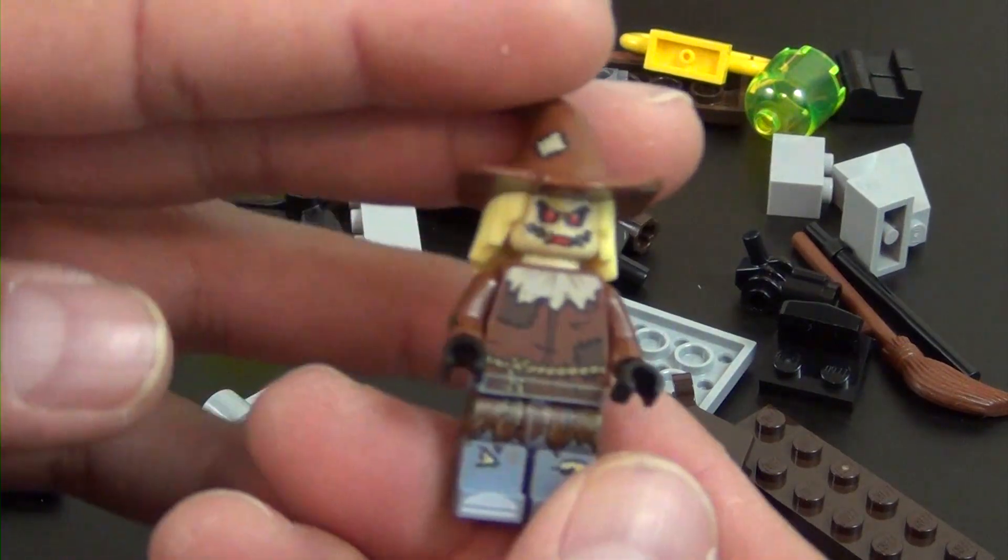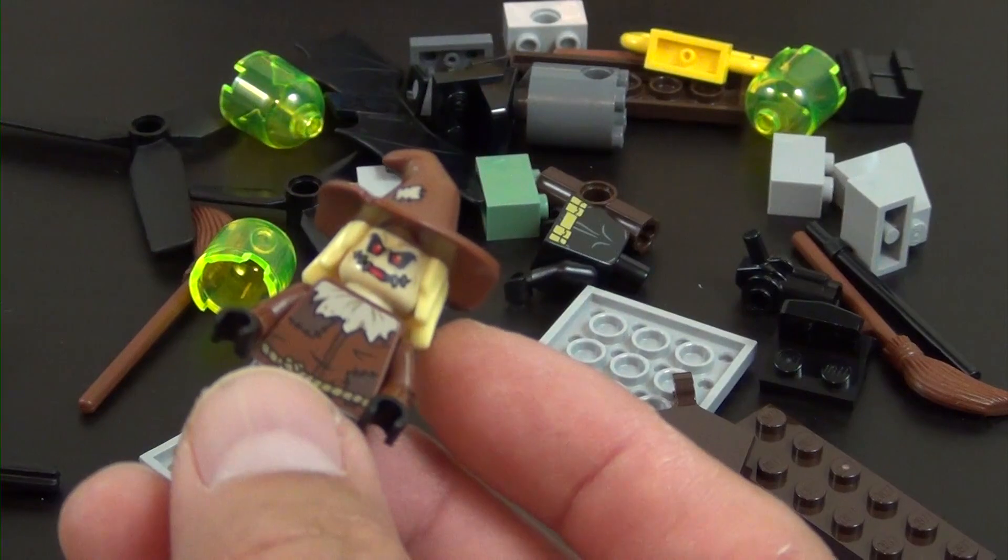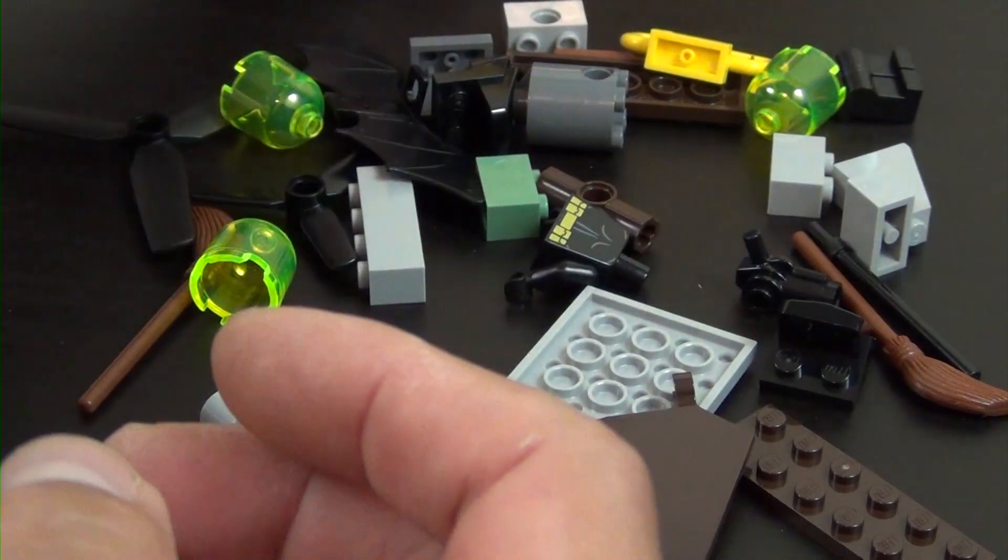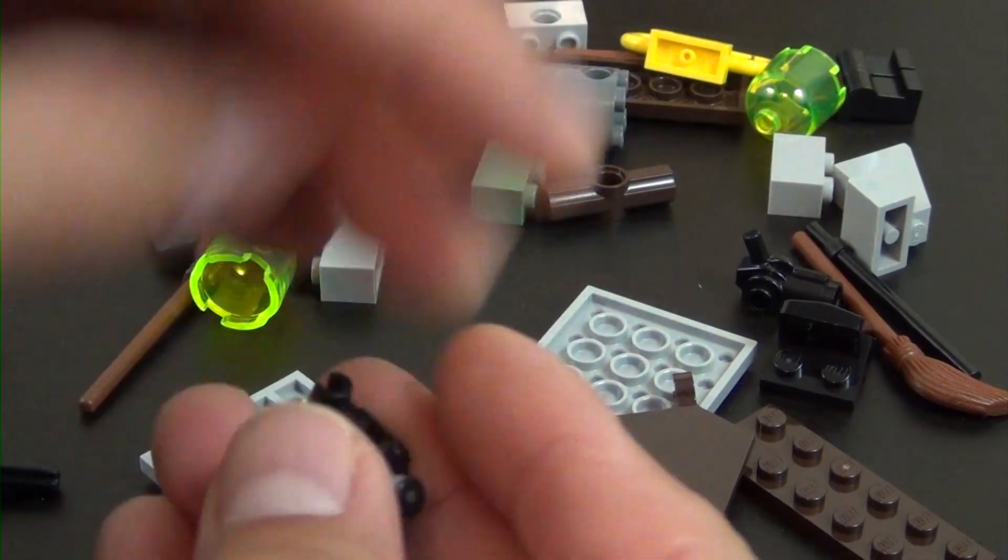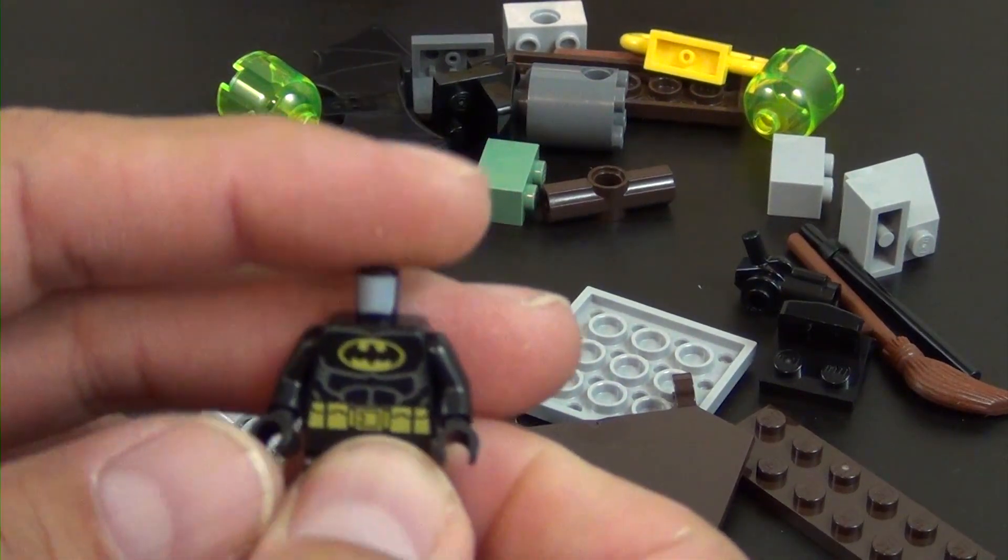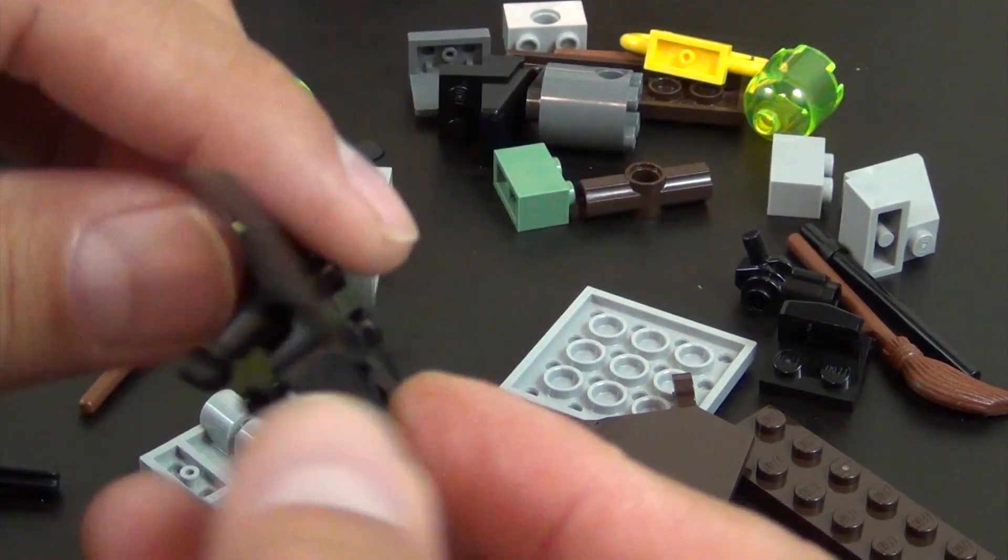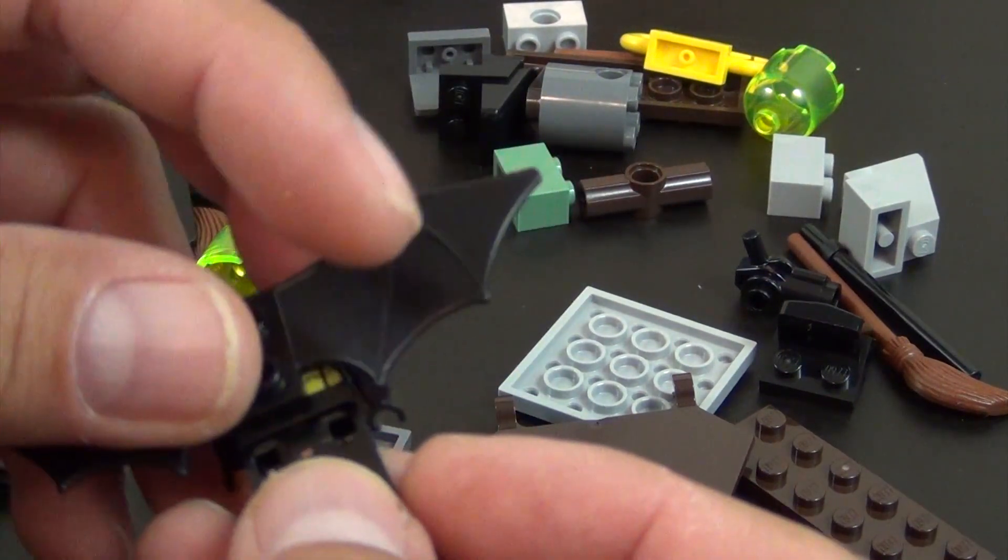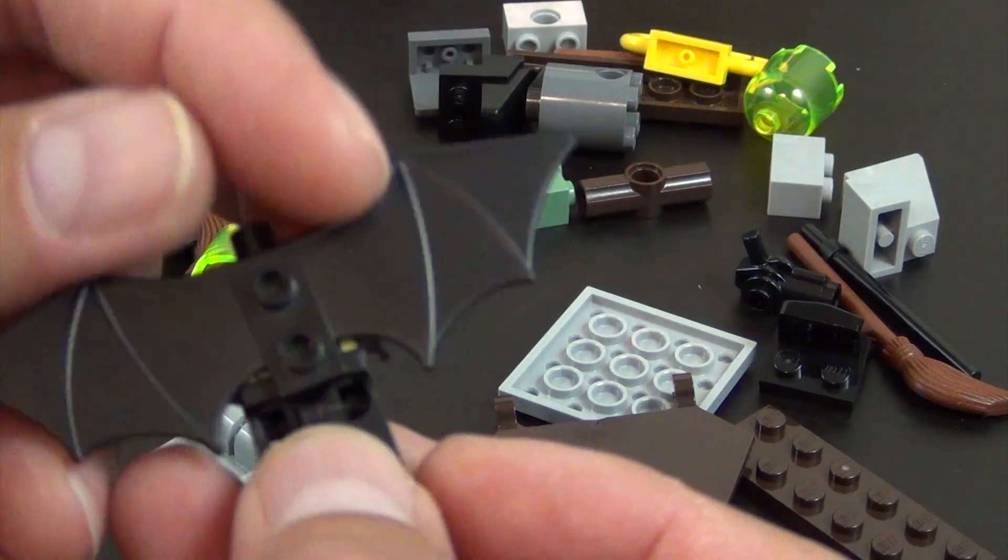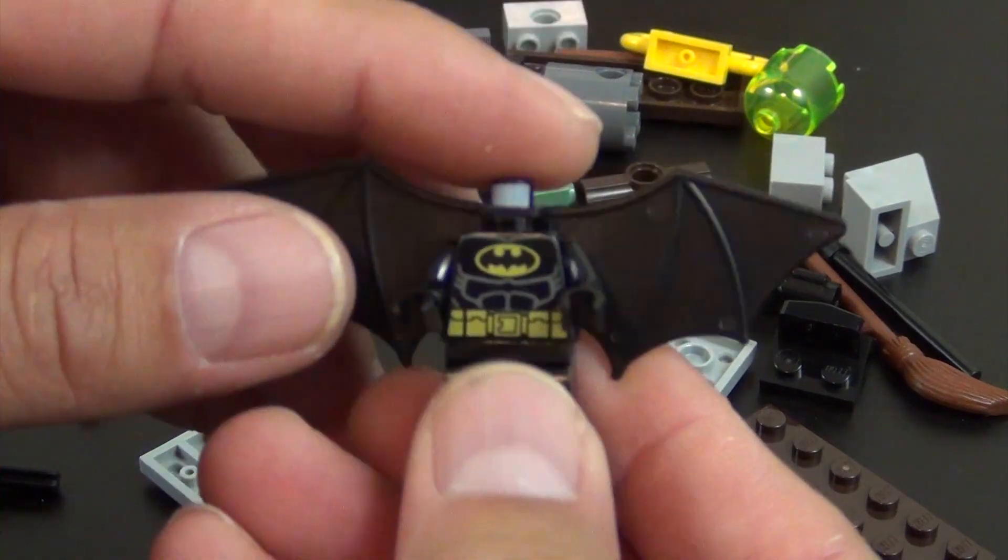So Batman is next. And this one doesn't have the bat belt, and I think the reason why is because of these wings. So if the belt part was on there, this part of the wing would not be able to slide onto the back.